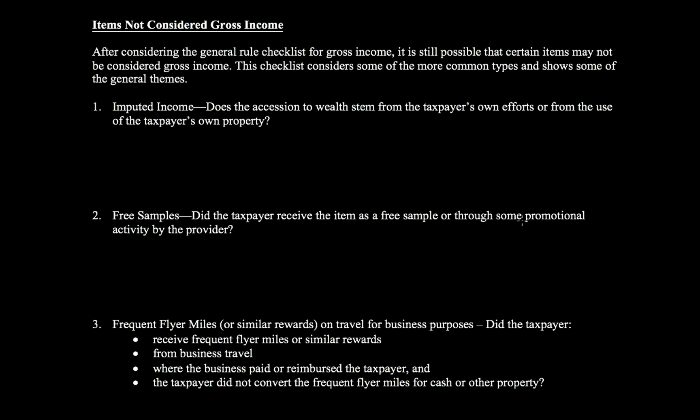There are also items not considered gross income that might seem like they should be. The first is imputed income. If you're an accountant who charges $500 per hour and you do your own tax return, should that be income to you? Economically yes — it's foregone income since you don't have to pay another accountant. However, for tax purposes, gross income does not include imputed income. The idea is that it would be an administrative nightmare for the taxpayer and the IRS to have to report all the times you mow your own grass, clean your own house, or drive your own car.